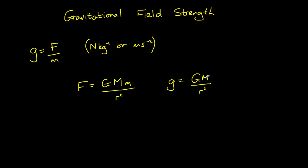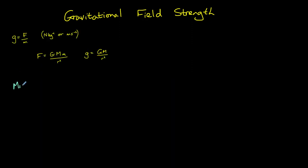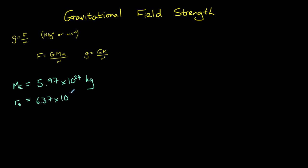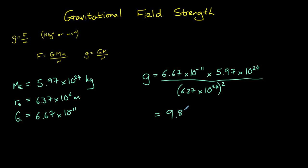Let's calculate the gravitational field strength on the Earth's surface. To calculate this, we need to know the mass of the Earth: 5.97 times 10 to the power of 24 kilograms. We need to know the radius of the Earth — the distance from the centre to the surface — which is 6.37 times 10 to the power of 6 meters. And we'll need big G, 6.67 times 10 to the minus 11. Substituting those into our equation gives us a gravitational field strength of 9.81 newtons per kilogram.